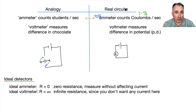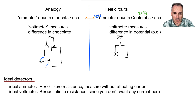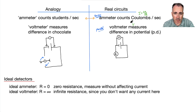Now we have another detector called a voltmeter. That one measures the difference in chocolate. Imagine a student with really long arms measuring the difference in chocolate going in versus chocolate out. In real life that's called a voltmeter, and it measures potential difference. So a voltmeter measures V, and it is connected in parallel.